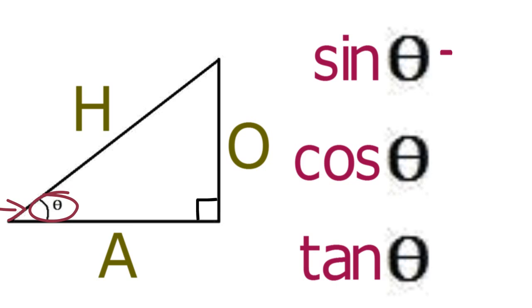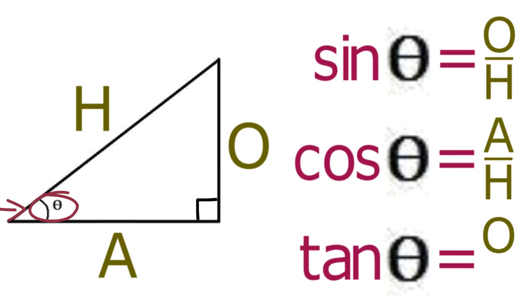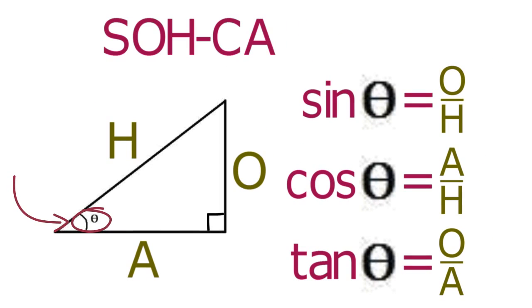The sine of theta equals O over H. The cosine of theta equals A over H. And the tangent of theta equals O over A. You can use the mnemonic SOHCAHTOA to help you remember these three ratios.